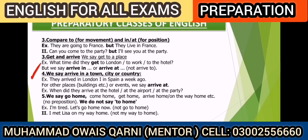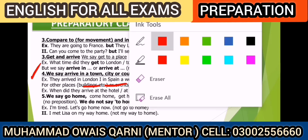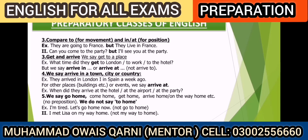We say 'arrive in' for a town, city, or country — for example, 'They arrived in London' and 'They arrived in Spain,' since London is a city and Spain is a country. For other places — buildings or events — we use 'arrive at.' For example: 'When did they arrive at the hotel?' 'When did they arrive at the airport?' 'When did they arrive at the party?' So use 'arrive in' for towns, cities, and countries; use 'arrive at' for buildings and events.